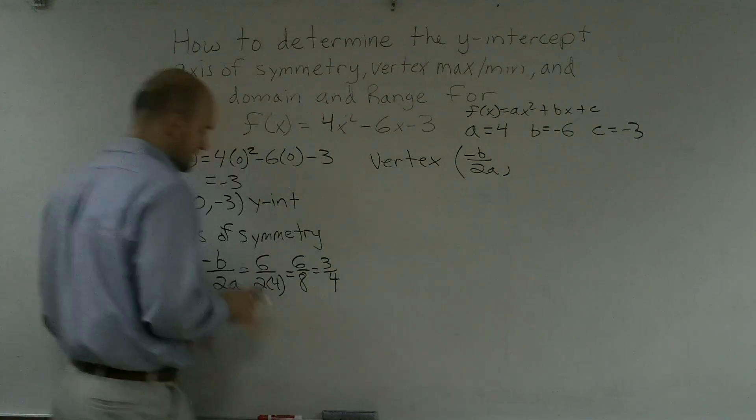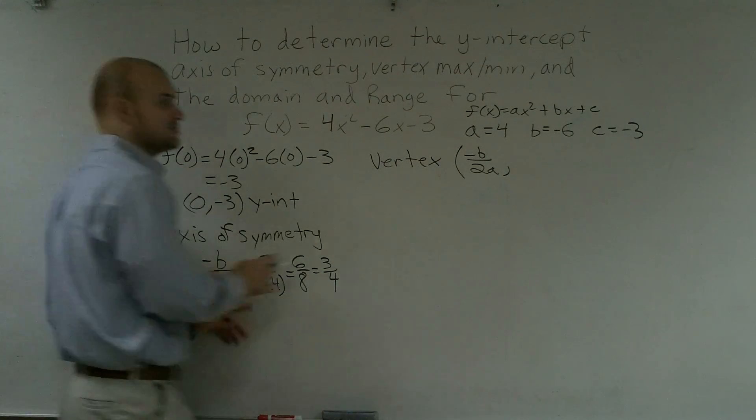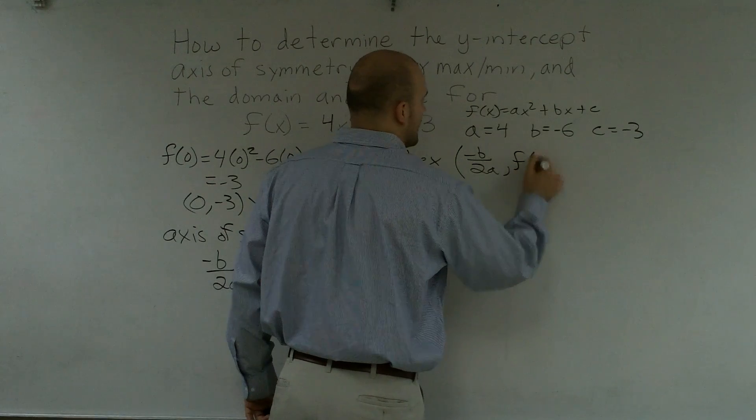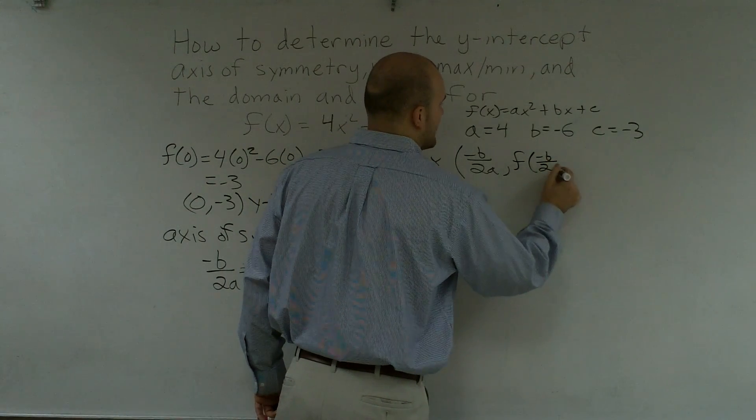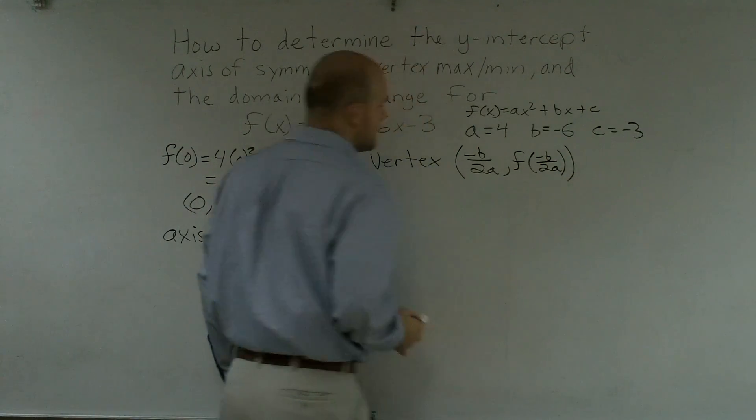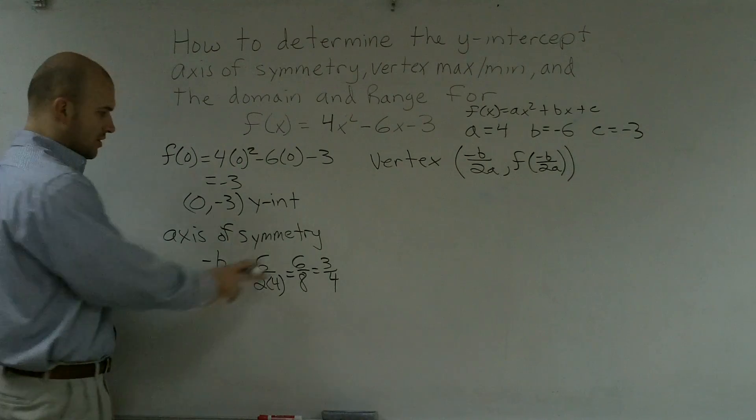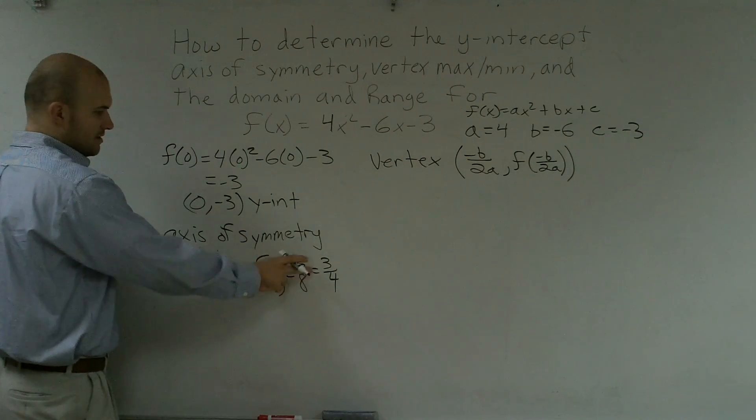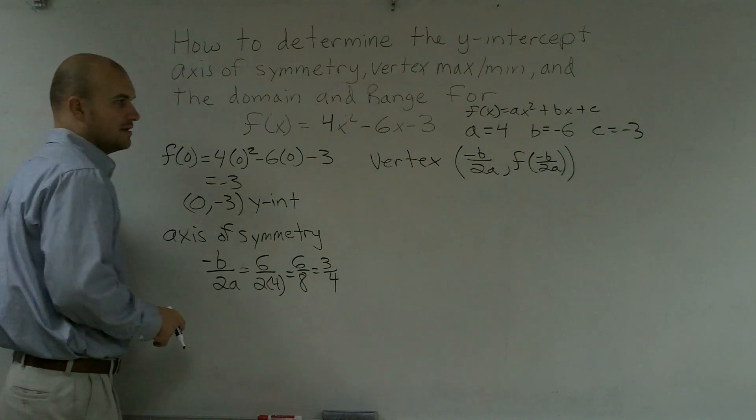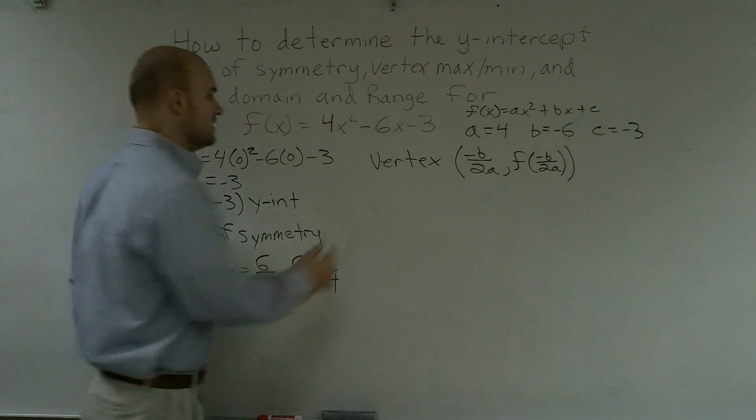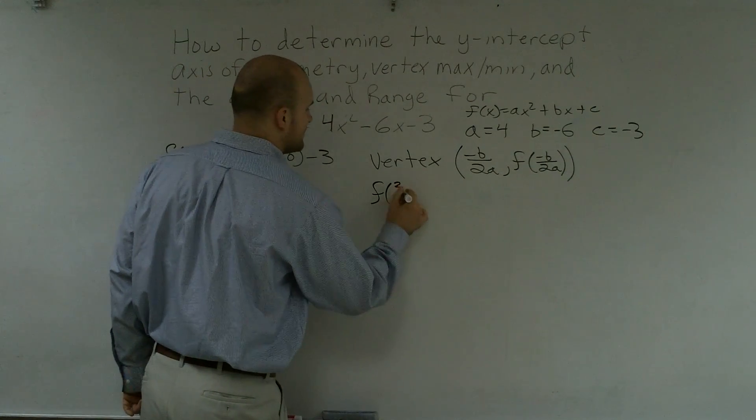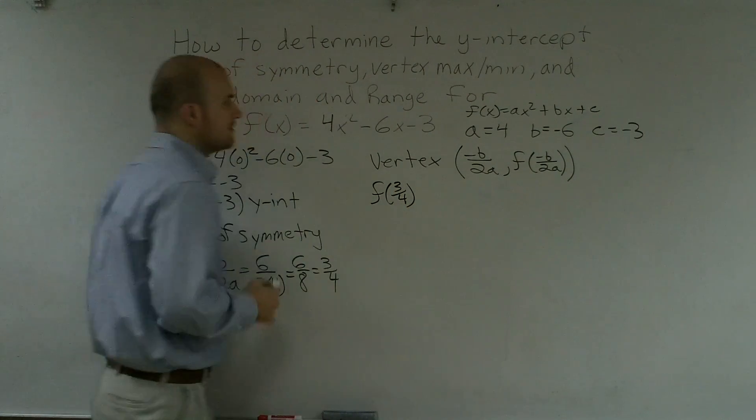when I say f(0), that means you're going to plug in 0 for all your x values. Well, for your vertex, now you need to plug in what your axis of symmetry value is. So f(-b/2a). And that's going to be your vertex. So if I say that the x value is 3/4, then now what I need to do is I need to plug in f(3/4) to find the other side of my vertex.